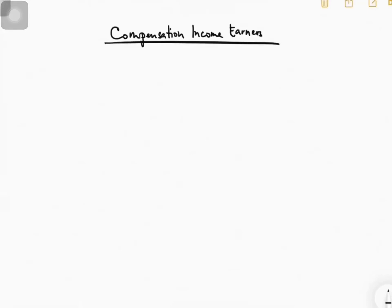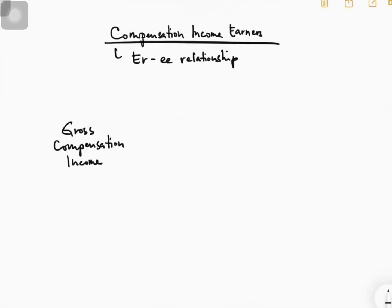In this video I'm going to talk about compensation income earners. Here you have an employer-employee relationship, and if you have that relationship the employee is getting compensation income. We call this gross compensation income, and I will divide it into two: number one, excluded, and number two, subject to regular income tax. For excluded, we have a lot but I will just be mentioning a few.